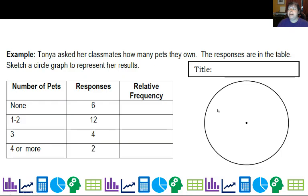Tanya asked her classmates how many pets they own and the responses are in the table. I'm going to do a circle graph with relative frequency. Six divided by 24 is 25 percent, 12 divided by 24 is 50 percent, 4 divided by 24 is 16.7, and 2 divided by 24 is 8.3 percent.